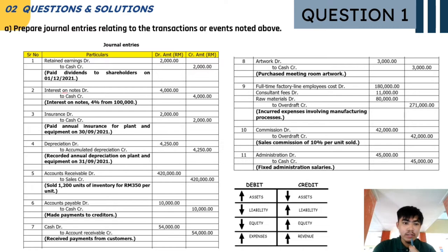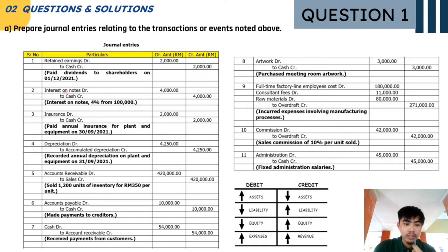Next, we have the insurance account — it is debited while the cash account is credited, as we paid annual insurance for plant and equipment. The depreciation account is debited as the accumulated depreciation account is credited. The accounts receivable value is credited as the sales account is credited, as we sold 1,200 units of inventory at 350 ringgit per unit. Accounts payable is debited and cash is credited as we made payments to creditors.